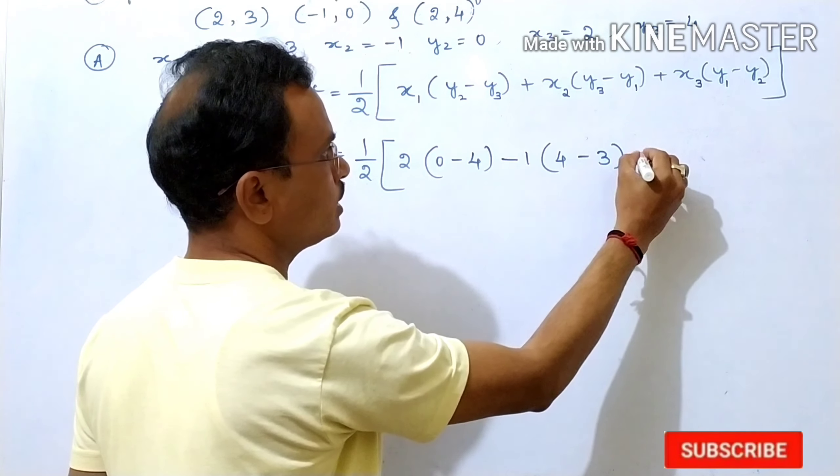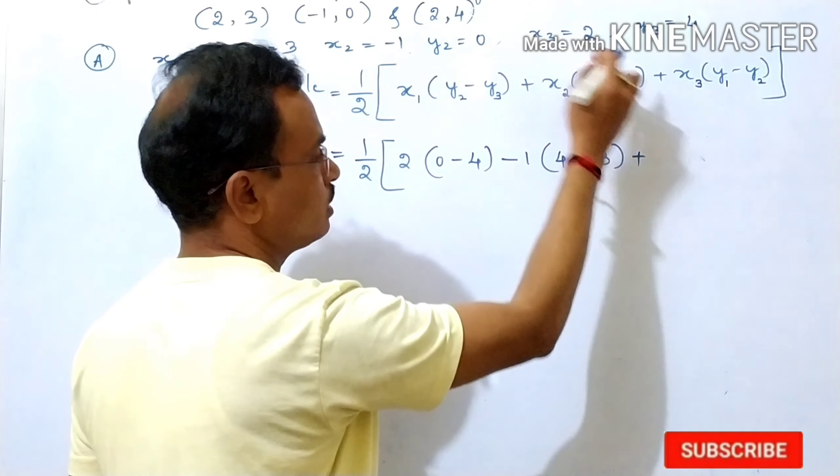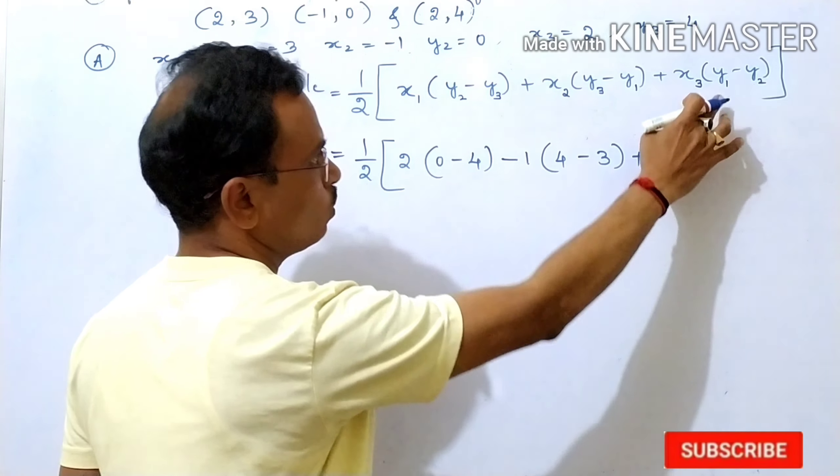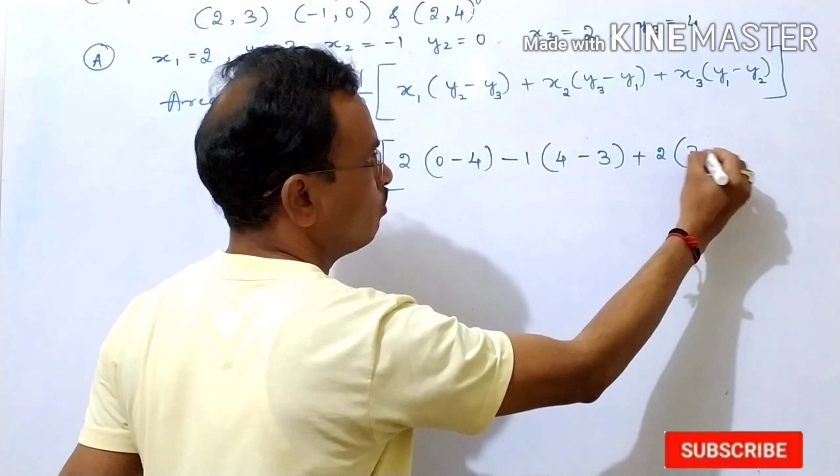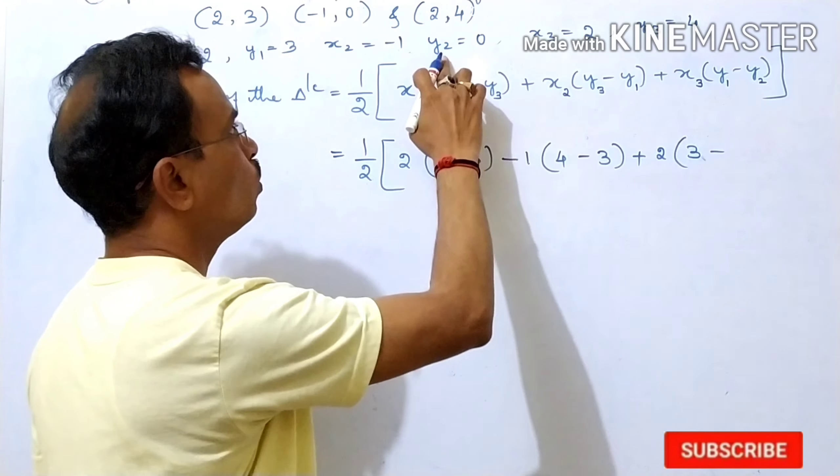Then plus x3, x3 is 2, y1, y1 is 3, minus y2, y2 is 0.